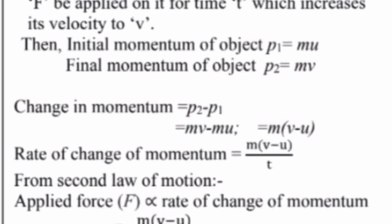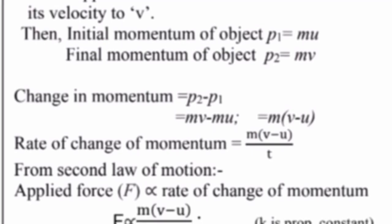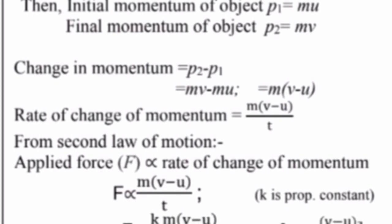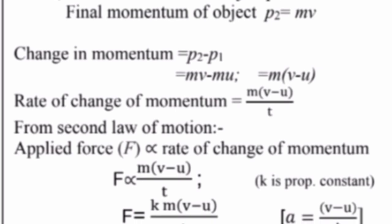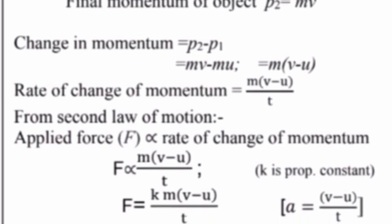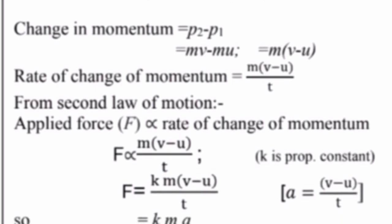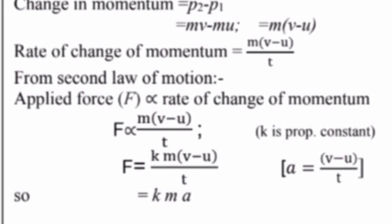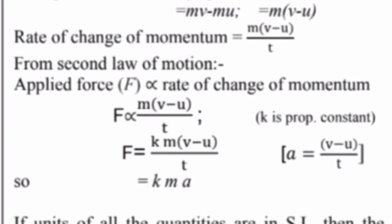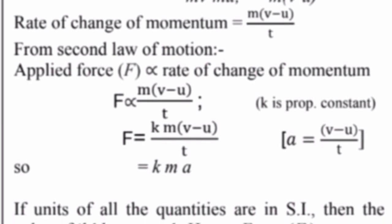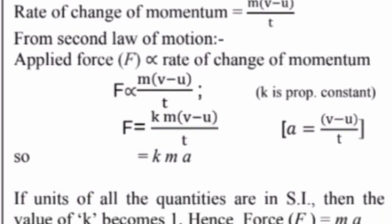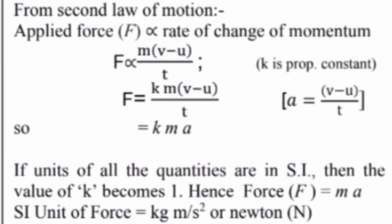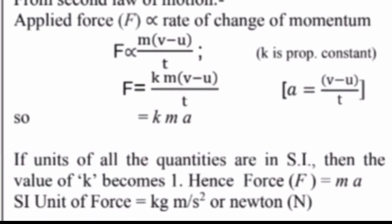Rate of change of momentum equals m multiplied by v minus u upon t. From second law of motion, applied force F is directly proportional to rate of change of momentum. F is proportional to m times v minus u upon t. K is a constant here, F equals k m times v minus u upon t. We know that v minus u upon t is acceleration. So we can say F equals k m a. If units of all the quantities are in SI, then the value of k becomes one. Hence force F equals m a. SI unit of force is kilogram meter per second squared or newton.